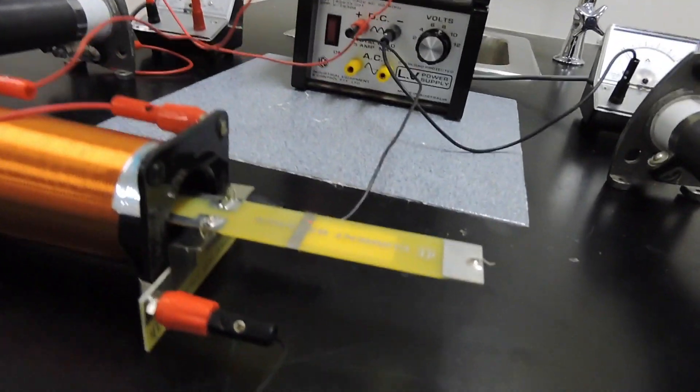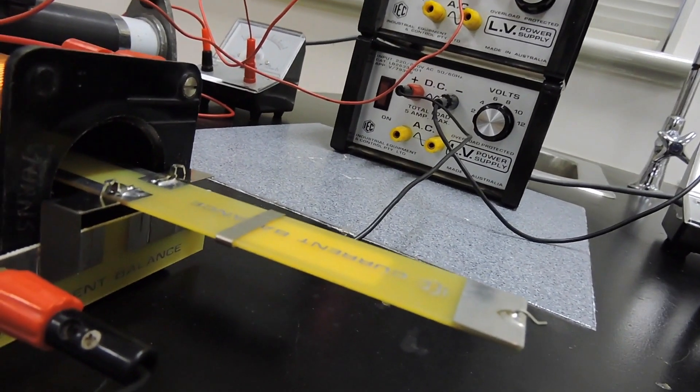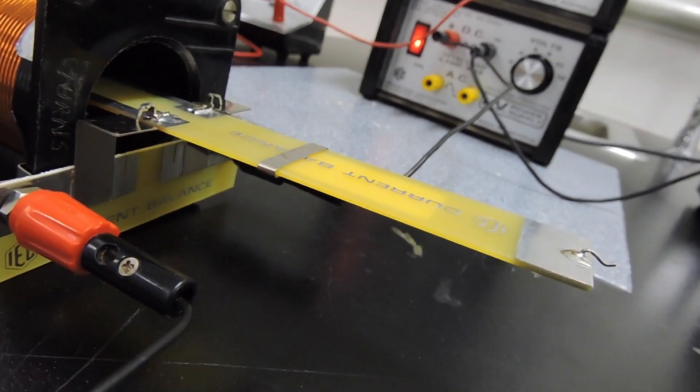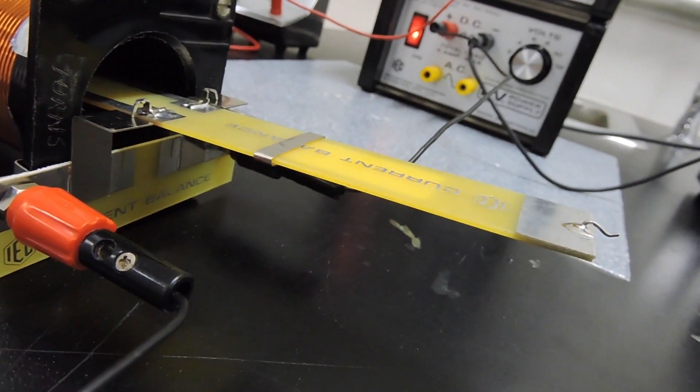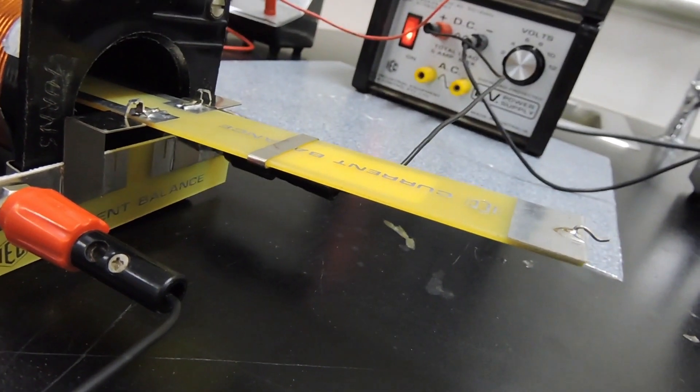I'm going to turn the current on and you're going to see we're going to get a deflection. I'll hold it nice and steady and turn the current on. It clearly deflects up nicely. You want it to deflect up because obviously we want to add the staple to counteract that.